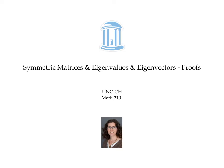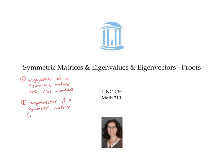In a previous video, we stated two facts about the eigenvalues and eigenvectors of symmetric matrices. First, we said that the eigenvalues of a symmetric matrix are all real numbers — no complex numbers that are not real occur as the roots of the characteristic polynomial. The second fact is that the eigenvectors of a symmetric matrix corresponding to distinct eigenvalues are orthogonal.